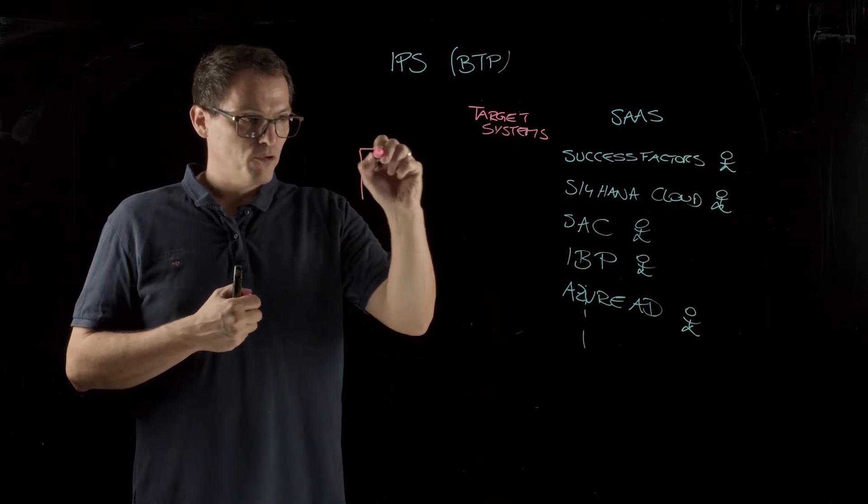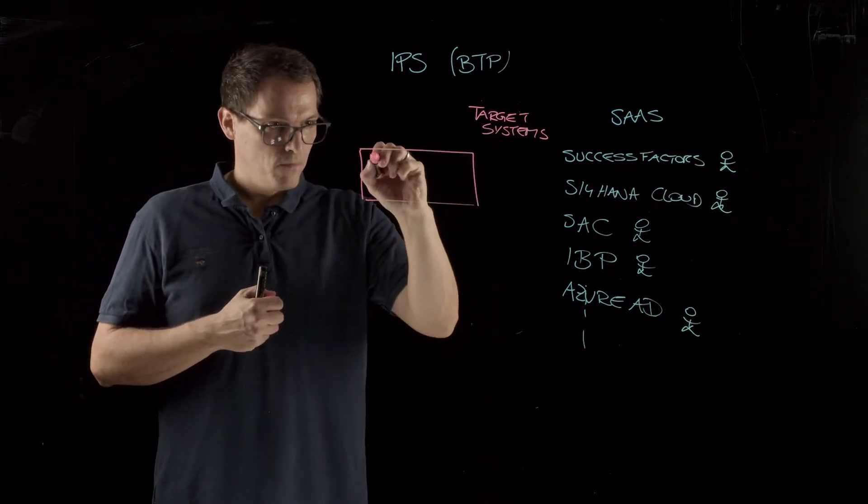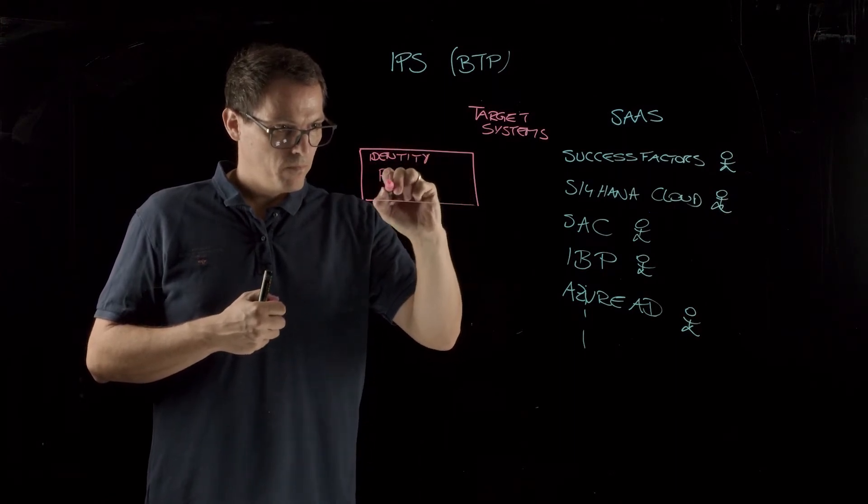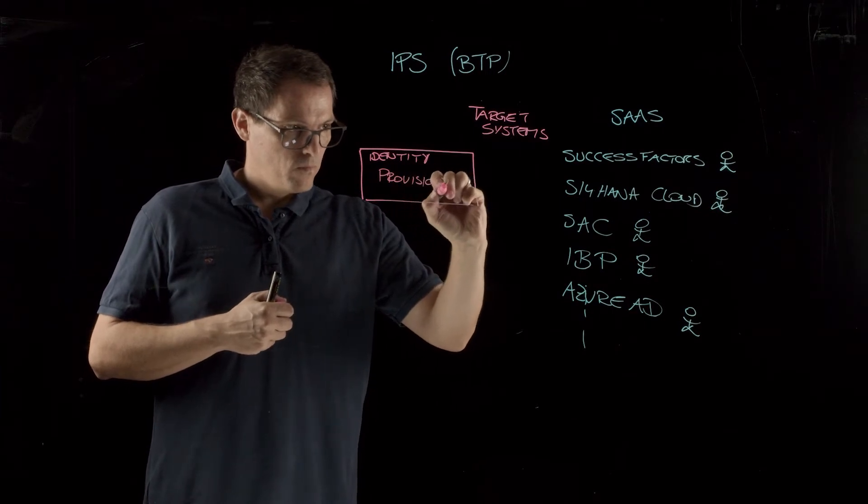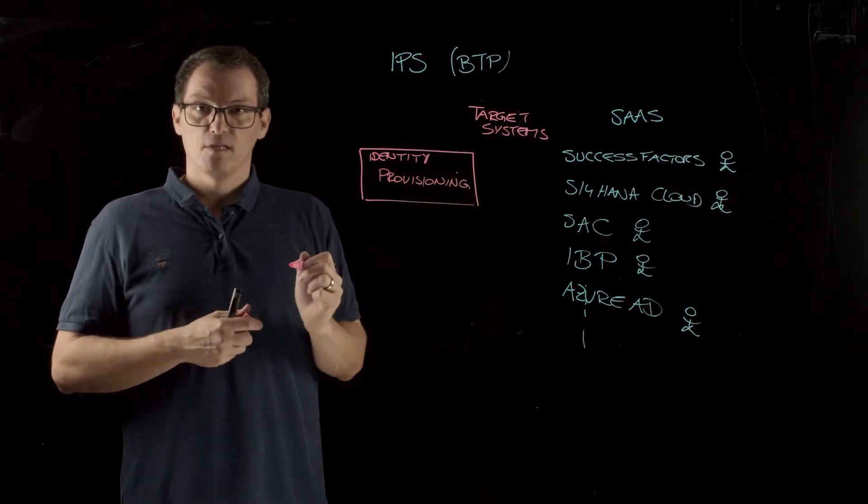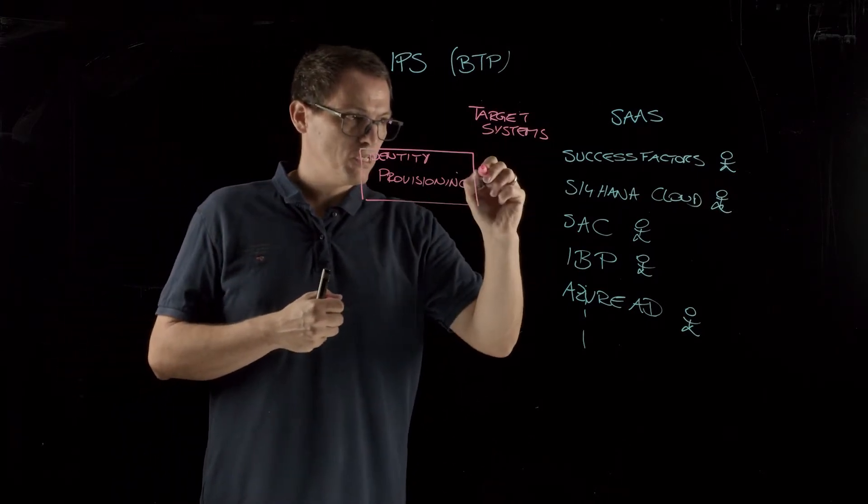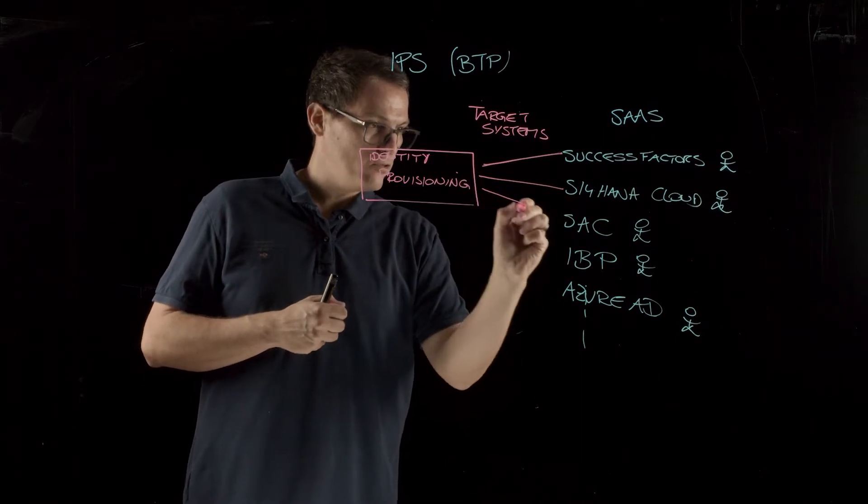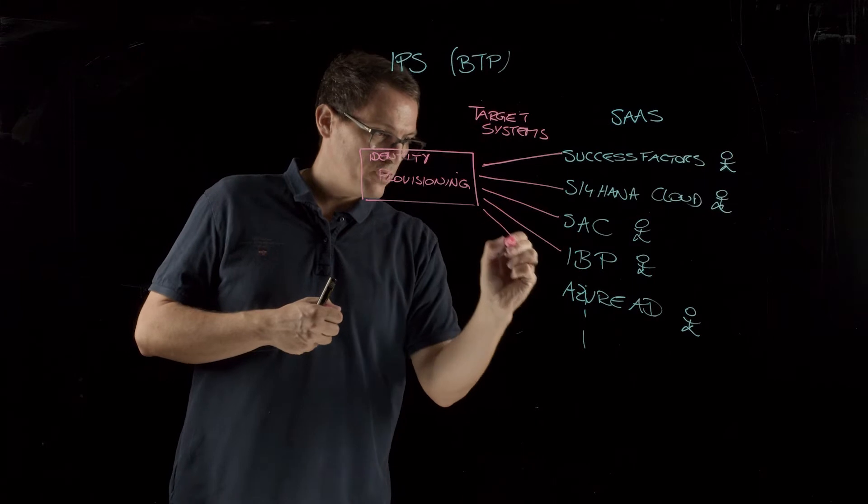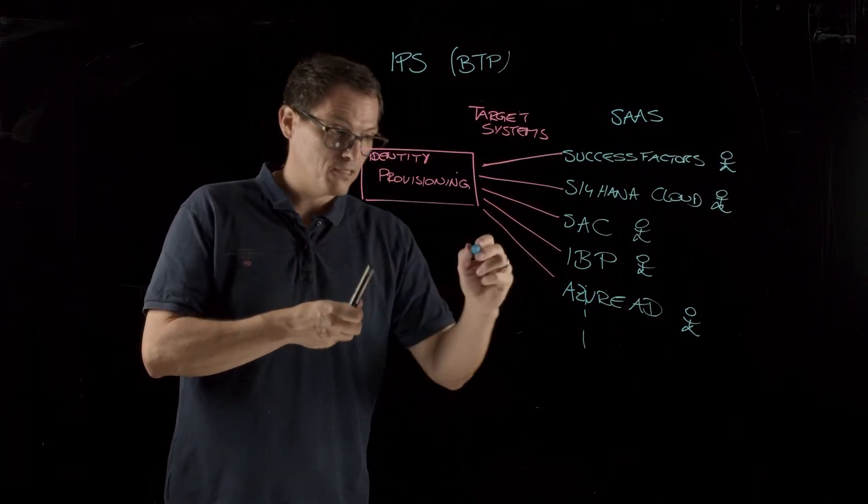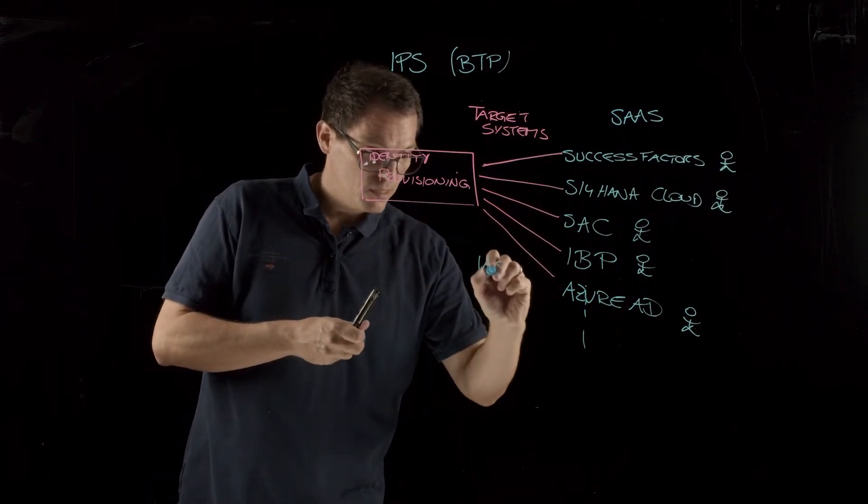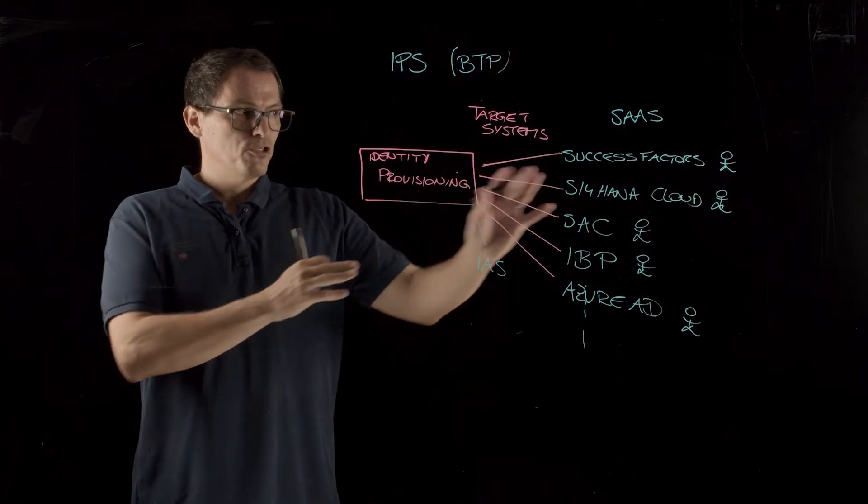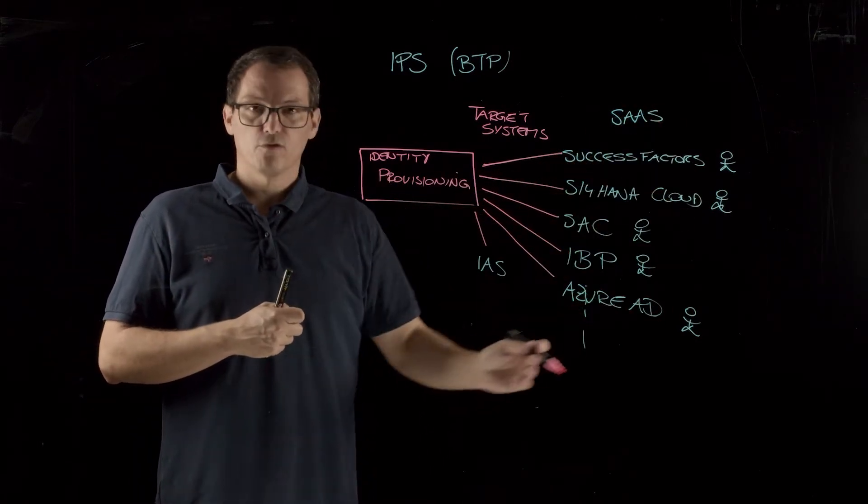Therefore, we have a service called identity provisioning. This service has connectors to different target systems, to SuccessFactors, to S4HANA Cloud, to the Analytics Cloud, to IBP, to Azure Active Directory, also to identity authentication, the IAS. And with this, we can provision the users and the groups into all the different systems.